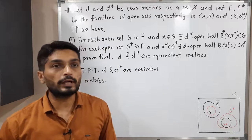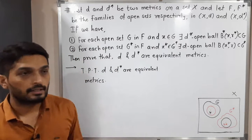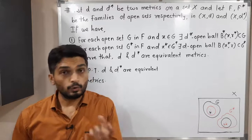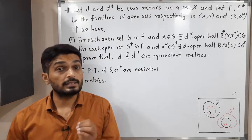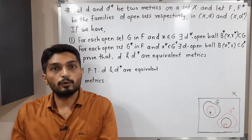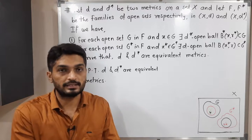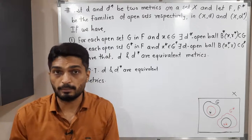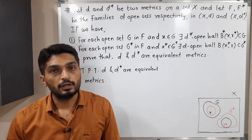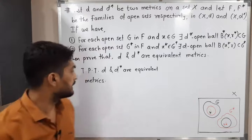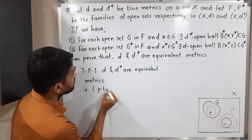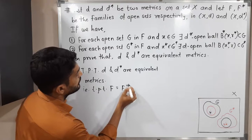What we have to prove: we have to prove that D and D* are equivalent metrics. You know the definition of equivalent metrics — when two metrics are equivalent, the family of D-open sets equals the family of D*-open sets. In simple language, we have to prove F is equal to F*.